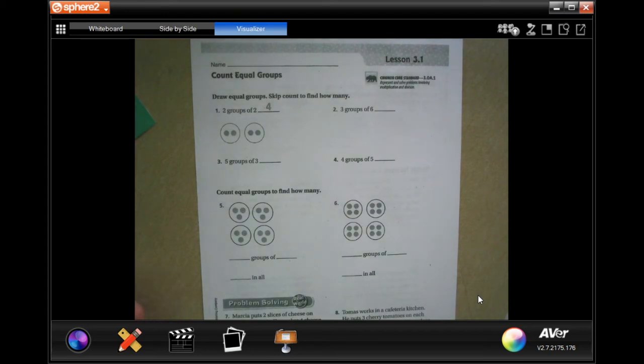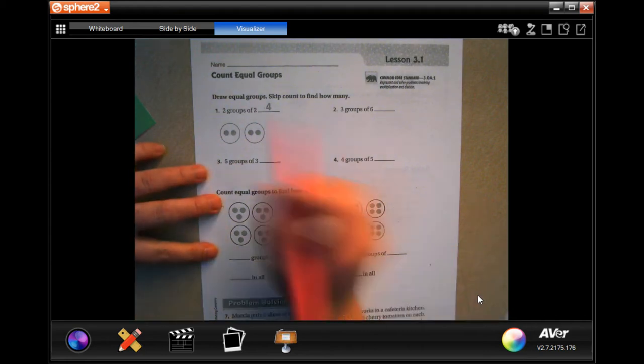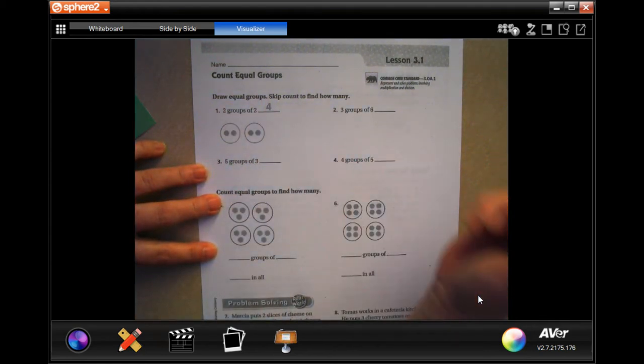Hey guys, welcome to third grade, chapter three, lesson one. We're going to go ahead and get started. So what we're doing on this one is it wants us to draw the equal groups and give us a count to find out how many.